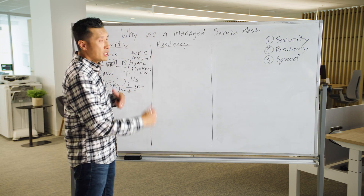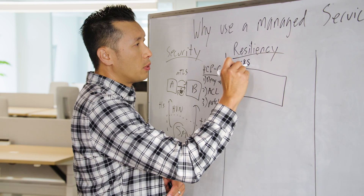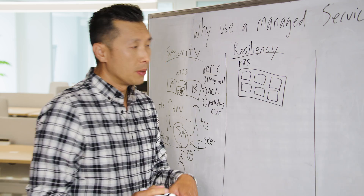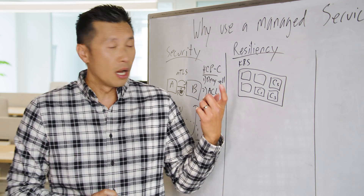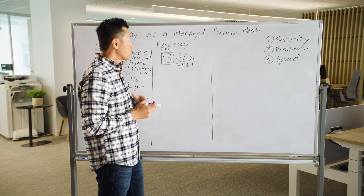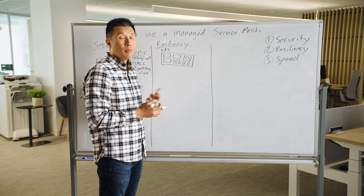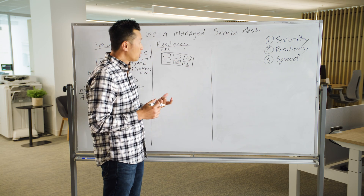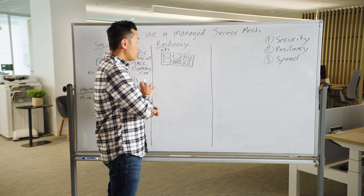For resiliency, let's say you're deploying Consul in your own environment, managing it yourself on Kubernetes. Within your Kubernetes cluster you have nodes, those nodes have pods, and you're running Consul servers in those pods alongside your services. The Consul servers are important because they store configurations, push out intentions and policies, and control a lot of the service mesh control plane. If one goes down, redundant servers can take over.